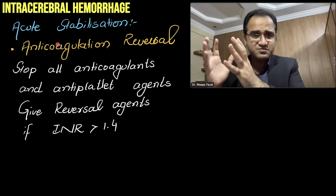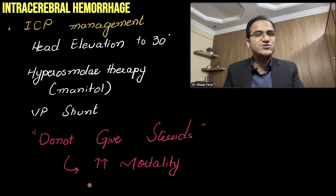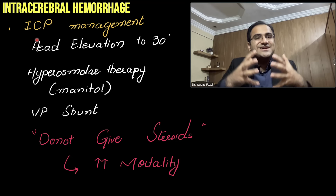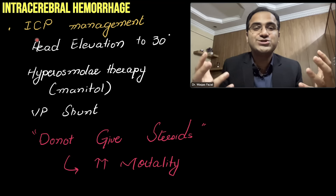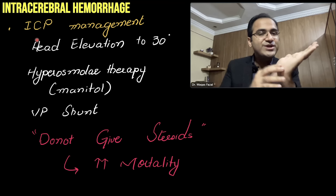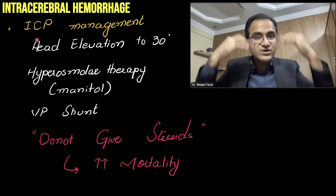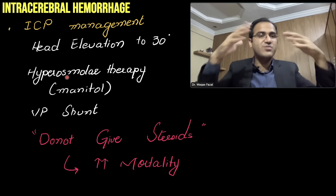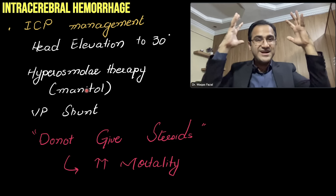If the patient has severe thrombocytopenia, give platelets. Controlling intracranial pressure is critical in ICH. Signs of increased ICP include Cushing's triad — bradycardia, hypertension, bradypnea. Elevate the head of the patient so that more blood can drain from the veins, using gravity. You can also give hyperosmolar therapy — hypertonic saline or mannitol — both osmotic agents that draw fluid out of the brain and reduce edema.